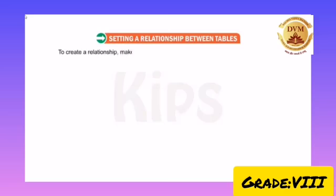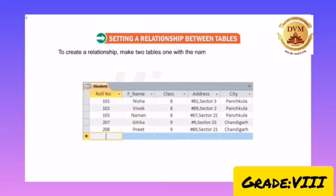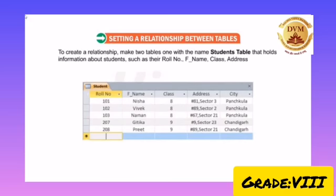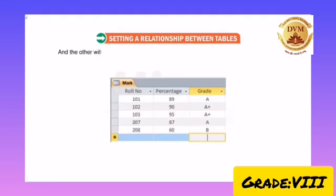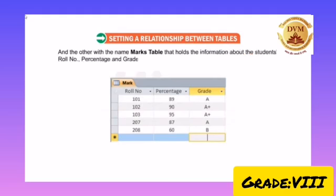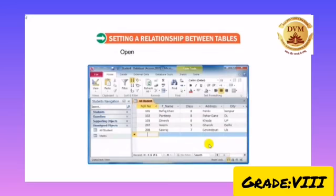To demonstrate relationships, make two tables. One with the name student table that holds information about students, such as roll number, first name, class, address, and city. The other with the name marks table that holds information about students' roll number, percentage, and grade. Open one of them in datasheet view.